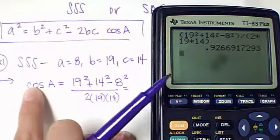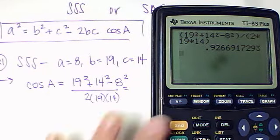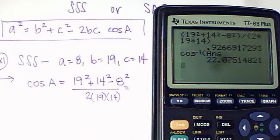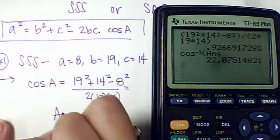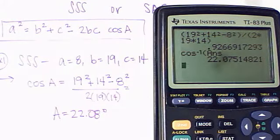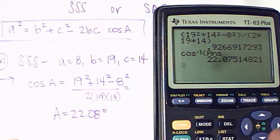And I get 0.92669. Now, that's what the cosine of A equals. To get A by itself, we're going to do second cosine, second answer. And that angle A is 22.08 degrees. As always, be sure that you're in degree mode, not radian mode. That would be a problem here. And that's our first angle.